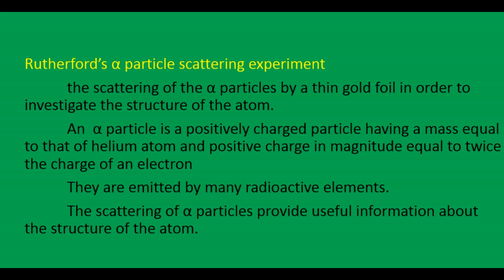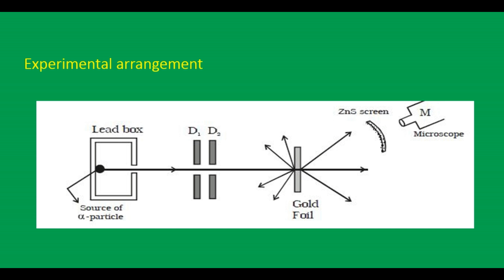The scattering of alpha particles provides useful information about the structure of the atom. In the experimental arrangement, a fine pencil of alpha particles was obtained from a radioactive material like radium or radon by placing it in a lead box with narrow openings — this is the source of alpha particles.